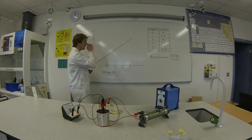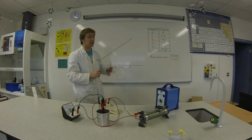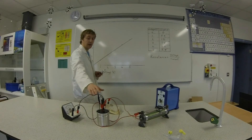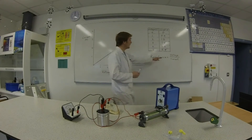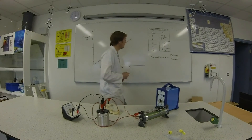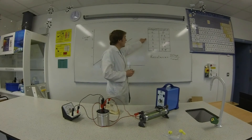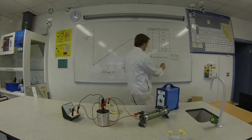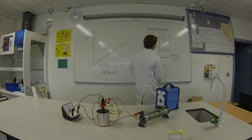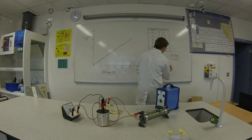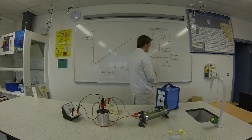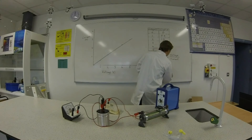Now we can use this information to find the resistance of this resistor here. So the resistance is voltage divided by current. We can take any point — let's take maybe this one here. So we can say resistance is equal to the voltage, which was 2, divided by the current, which was 1.2. And if you do that on your calculator, you'll find the answer is 1.6.